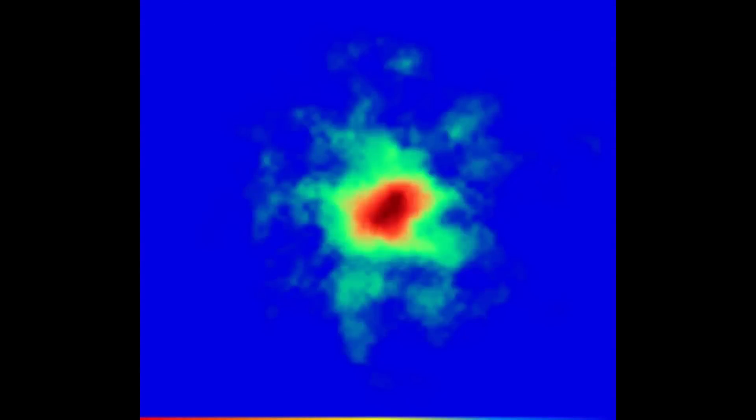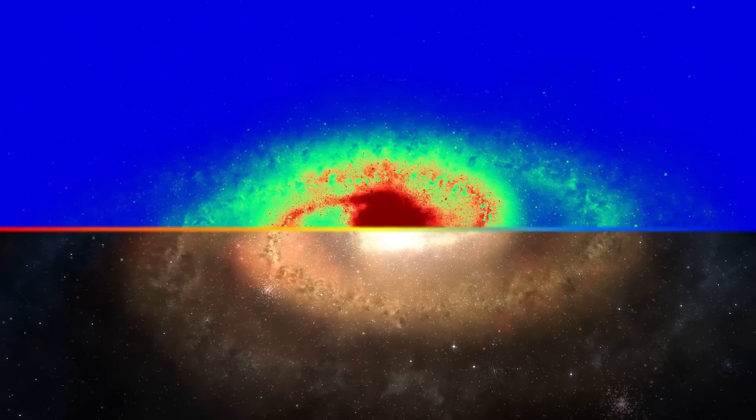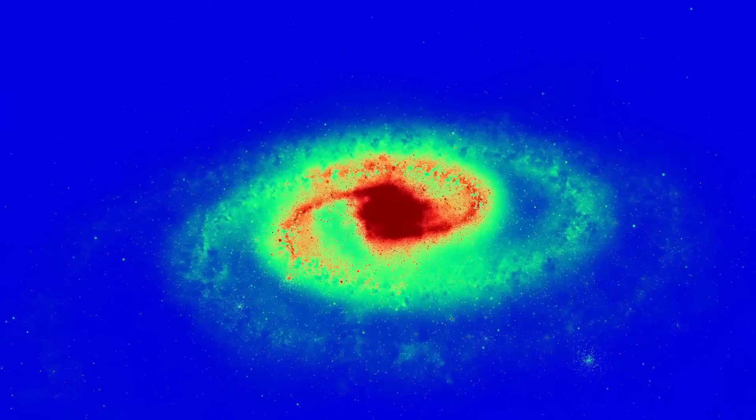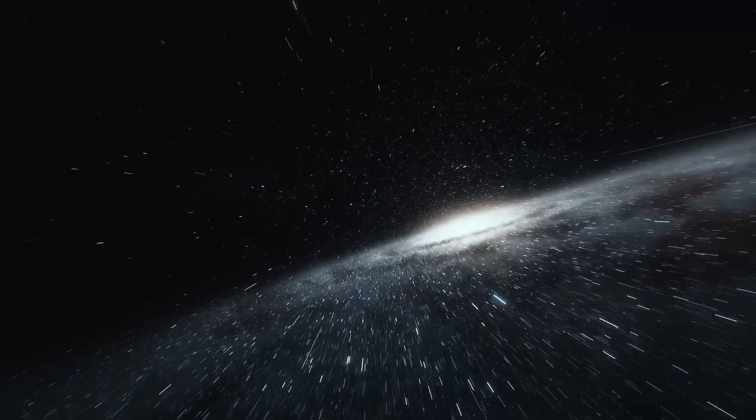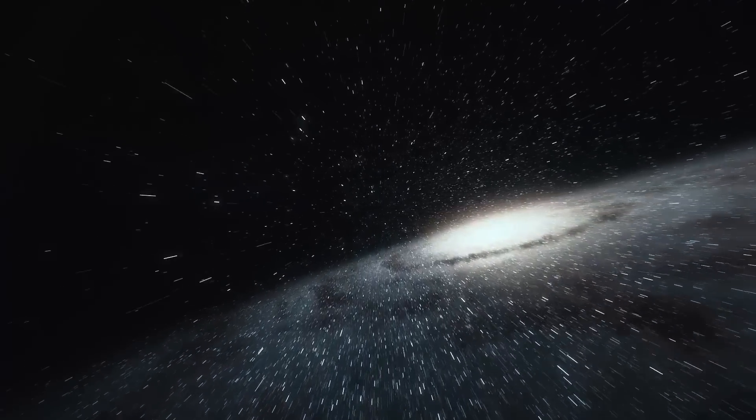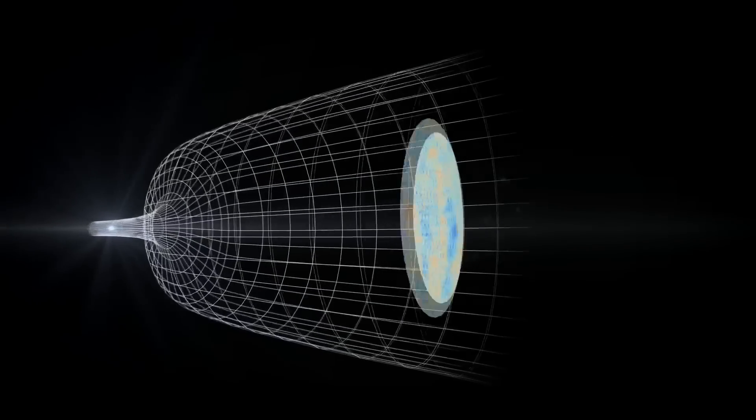The high-resolution data not only confirmed that REBELS-25 has a rotating disk, but also hinted at other advanced features, like a central elongated bar and possibly the beginnings of spiral arms. These characteristics are more in line with mature galaxies like our Milky Way, rather than one born so close to the Big Bang. So where does this leave our cosmology?